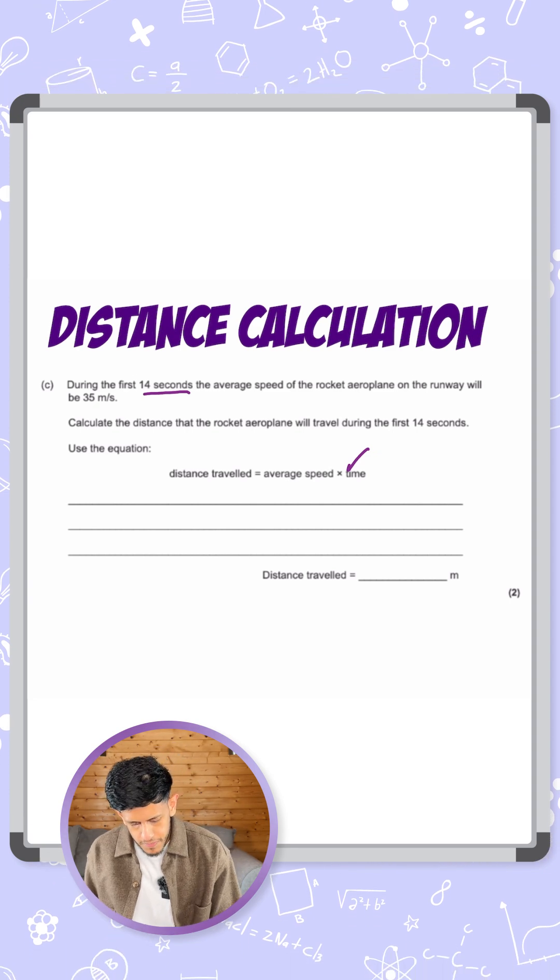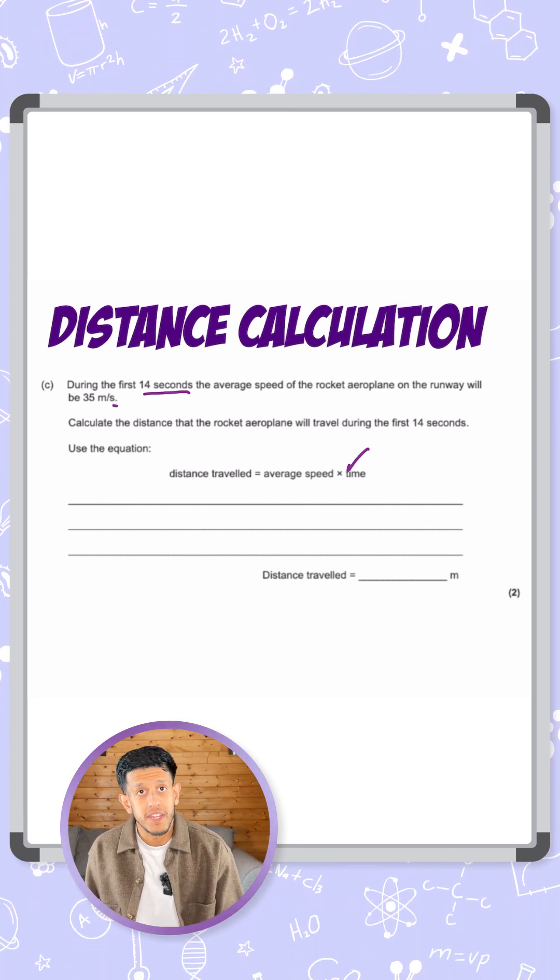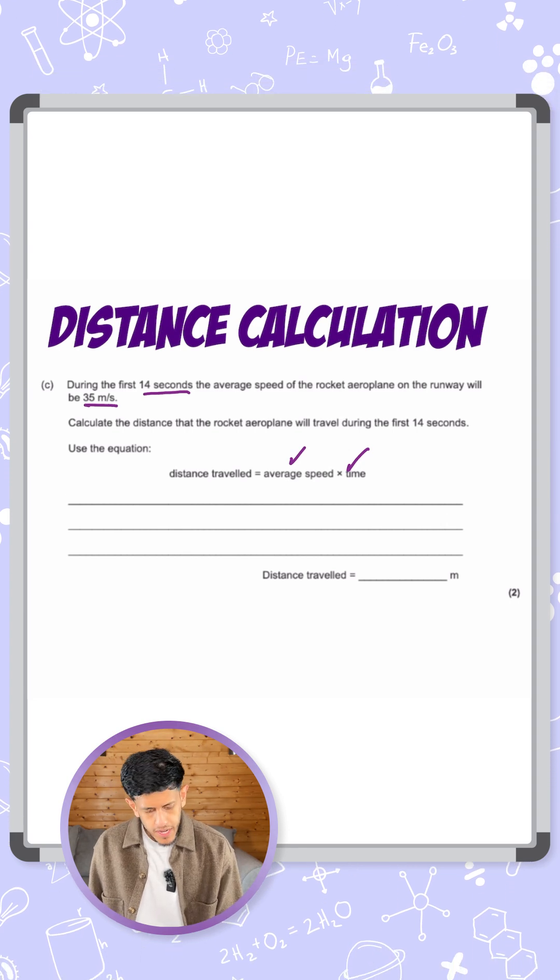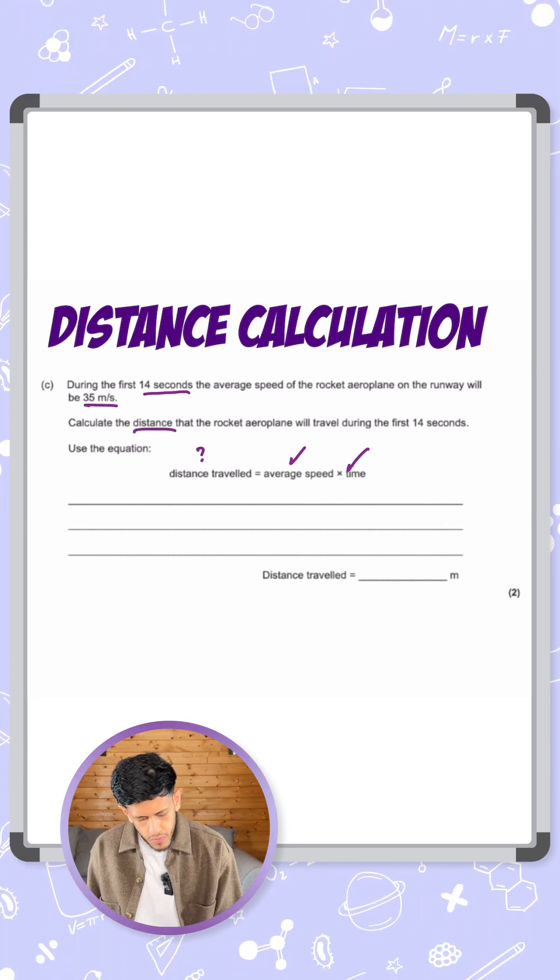And then we're also given that the speed of the rocket on the runway, average speed 35 meters per second. So I'll give that a tick as well. And they said calculate the distance. So I'll give that a question mark.